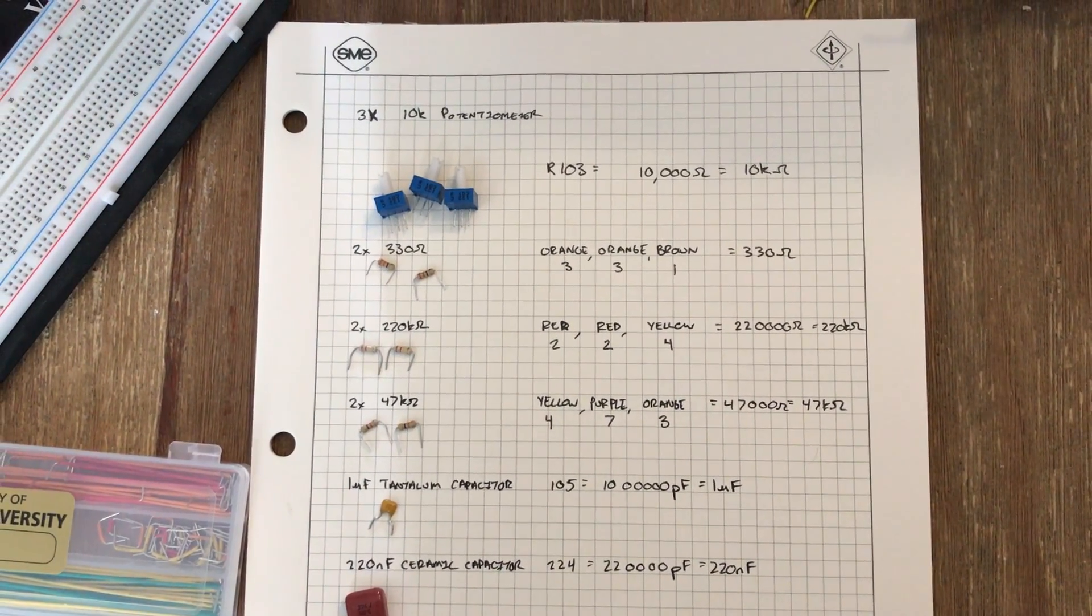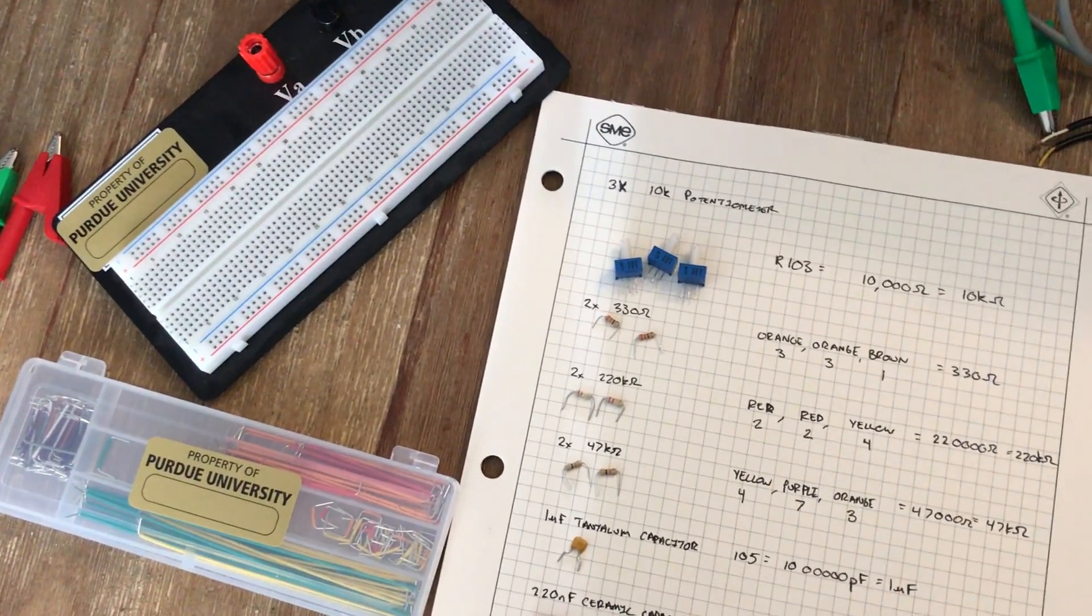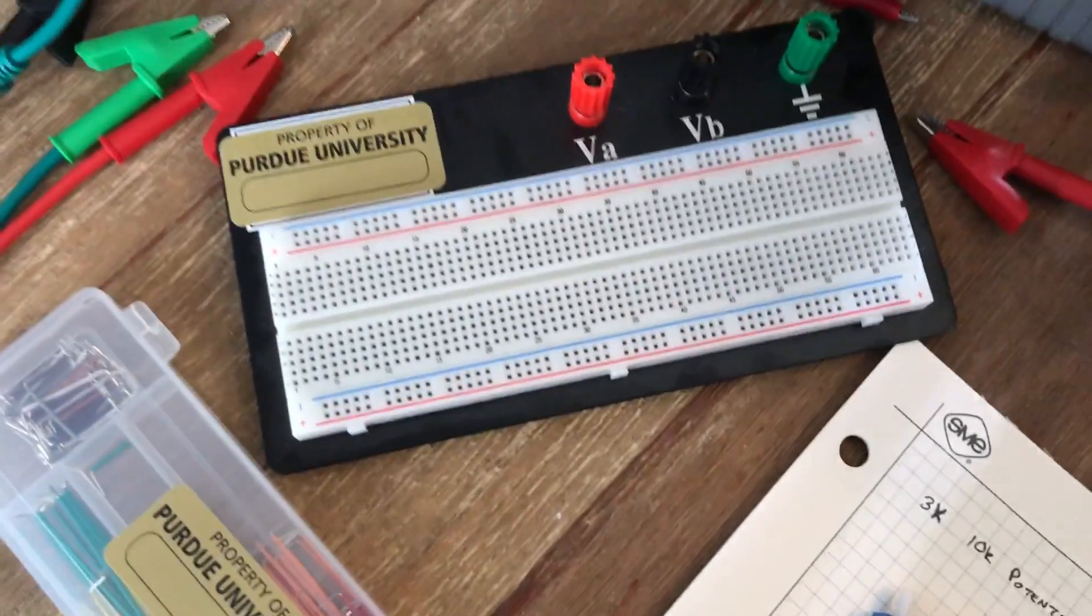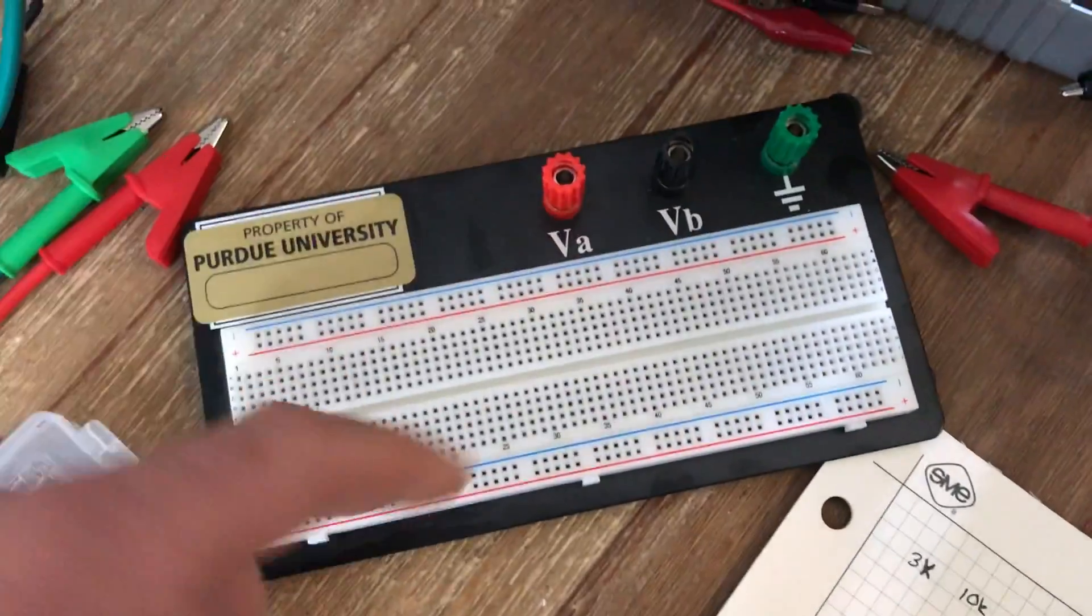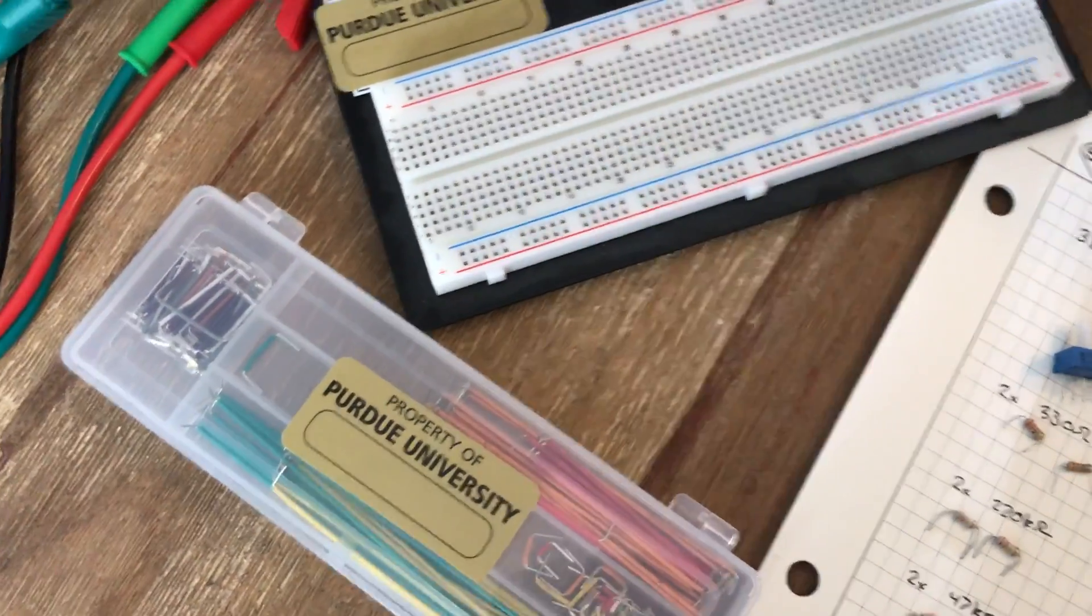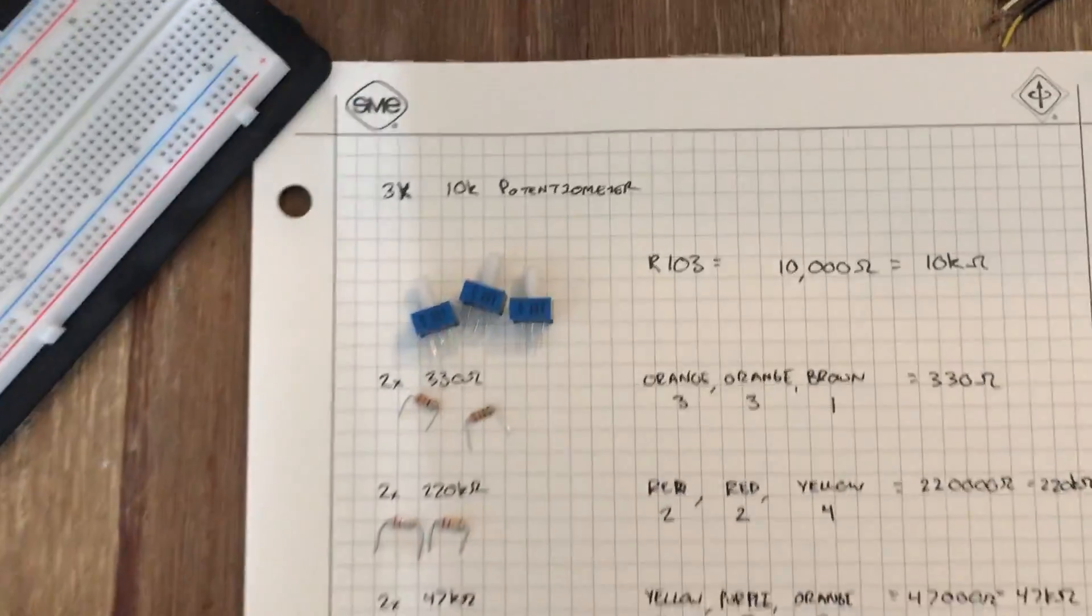To begin with, I've laid out the components necessary to complete the circuit construction. We have our breadboard that has three power supply inputs at the top. I have a general selection of jumper wires and then I've gone ahead and laid out the components necessary for the circuit build.